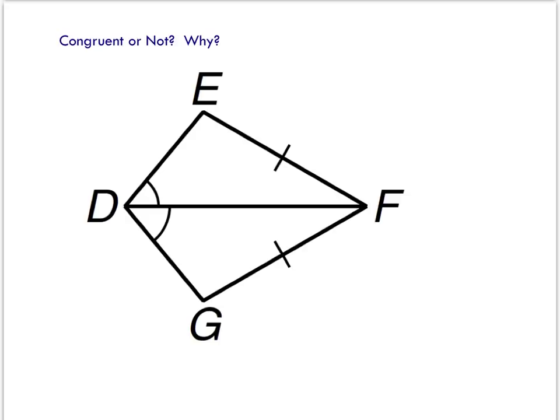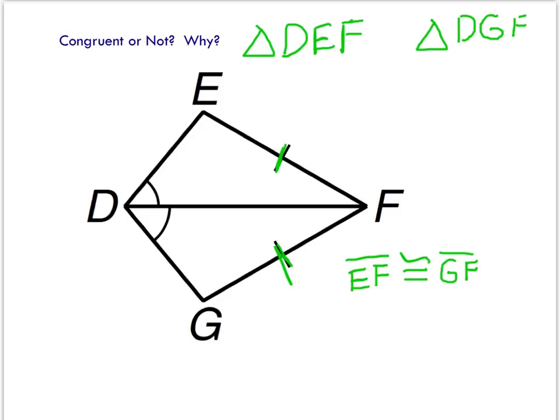What about these triangles? Can we prove that these two triangles are congruent? Let's name them: we have triangle DEF and triangle DGF. We've got a pair of sides that are congruent — let's label those. We've also got a pair of angles that are congruent; I'll number them angle 1 and angle 2.